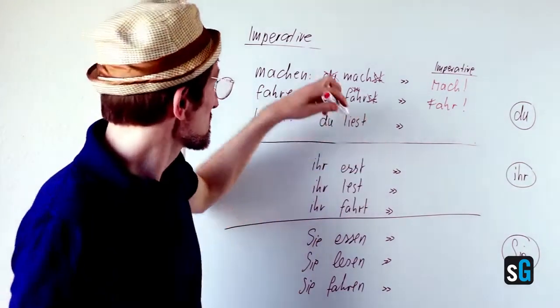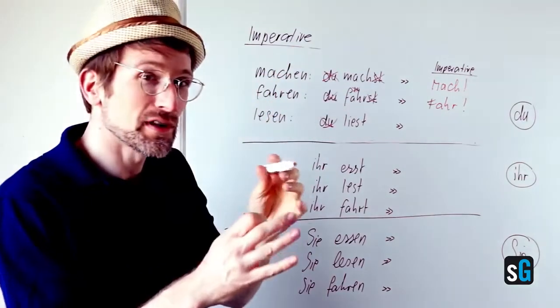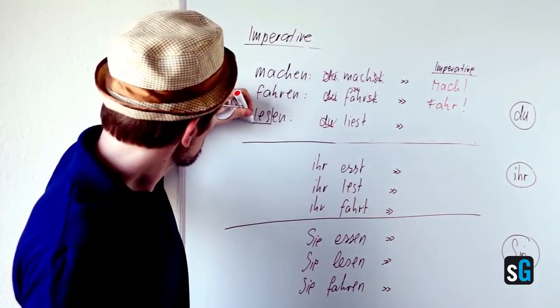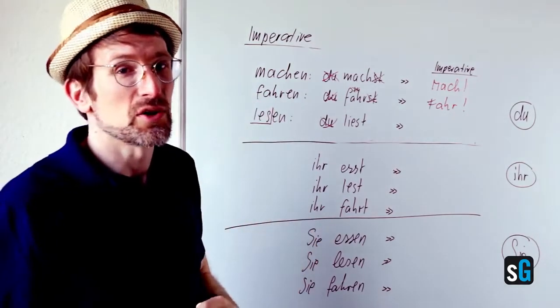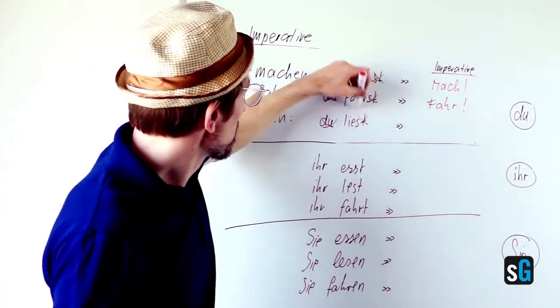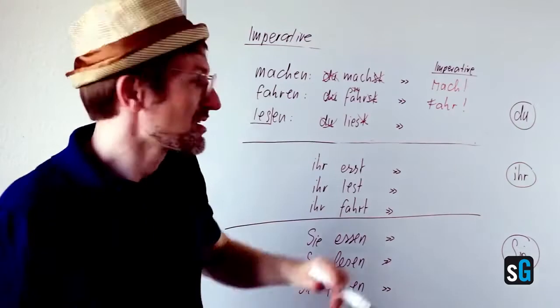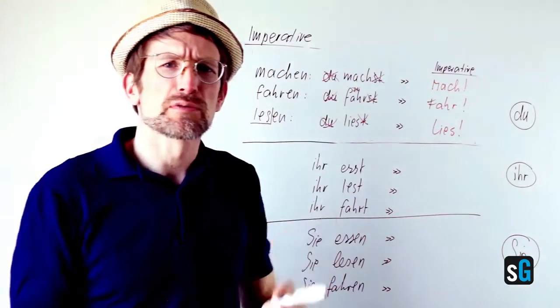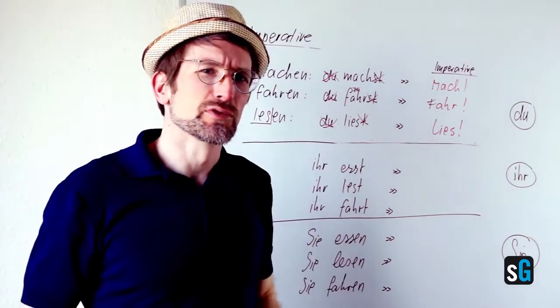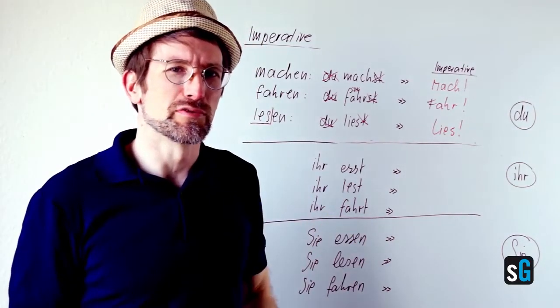Lesen, to read, du liest. And here I have a little problem. As the stem of lesen ends in an s, I need that s also. So I just eliminate the t and I'm left with Lies das Buch. Es ist wunderschön. Read the book. It's beautiful.